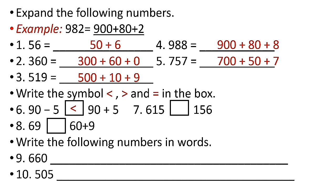Number seven: 615 [box] 156. What do you think? Is it less than, greater than, or equal? Since 615 is bigger than 156, you write greater than — 615 is greater than 156. Number eight: 69 [box] 60 plus 9. That is equal, because 69 and 60 plus 9 are equal.